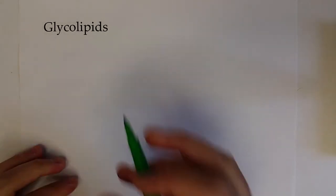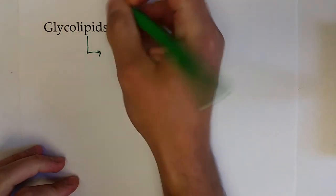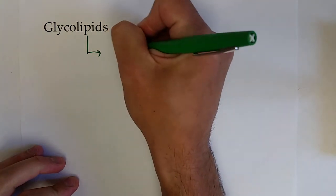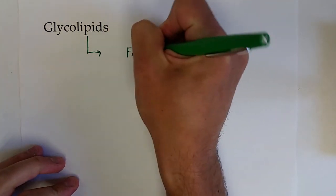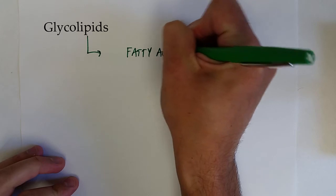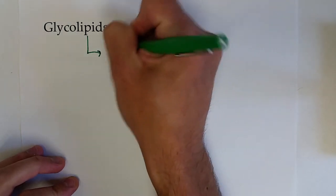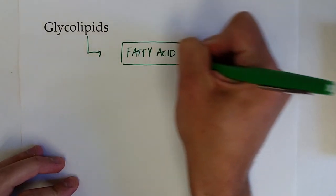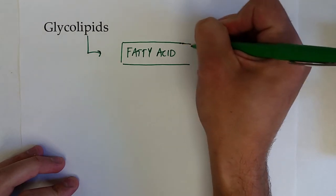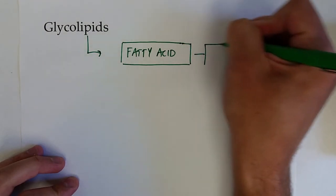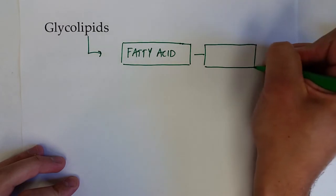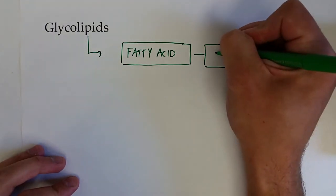The next class of lipids that we're going to talk about is glycolipids. And this is a type of lipid where a fatty acid or some other type of lipid, but usually fatty acids, is connected to a carbohydrate or some type of monosaccharide or disaccharide unit.